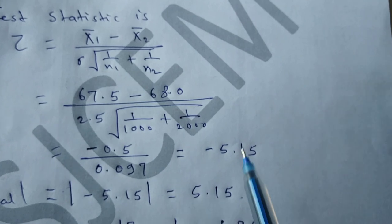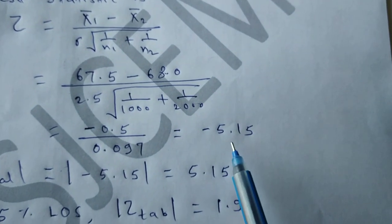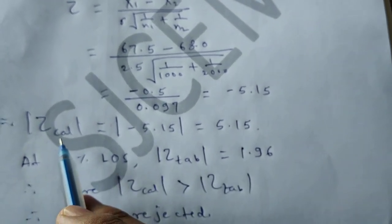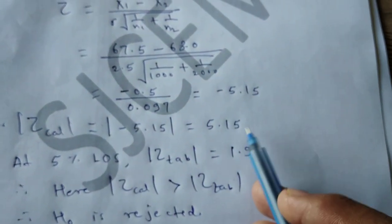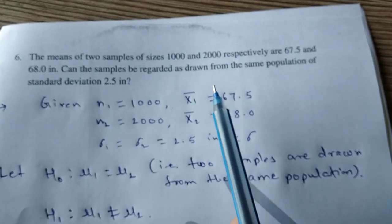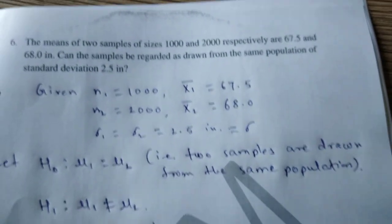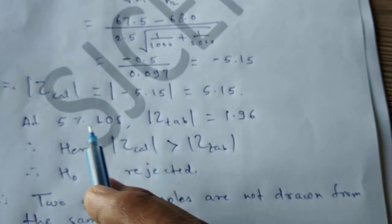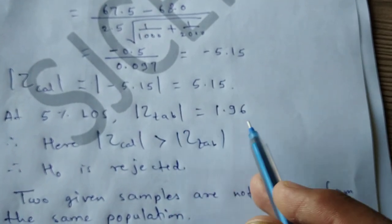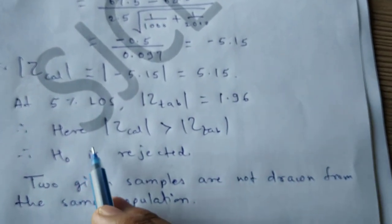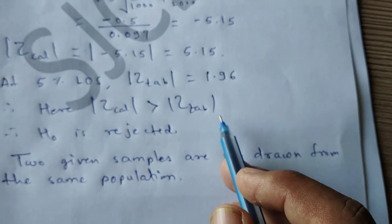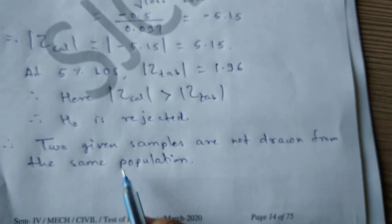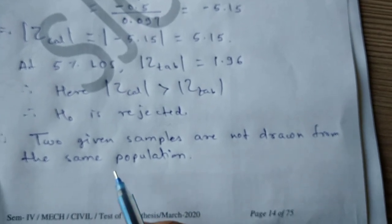Calculating all these values gives minus 5.15, so taking the absolute value, the modulus of Z calculated is 5.15. The level of significance is not mentioned, so we consider 5%. The tabulated value of Z is 1.96. Since Z calculated is greater than Z tabular, we reject H0. Rejecting H0 means the two given samples are not drawn from the same population.